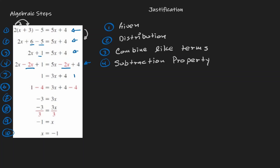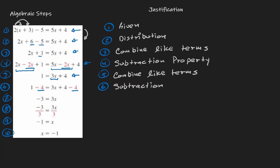If we take a look at the next line, notice that what happened is we combined like terms again. So the justification for step 5 is, again, combine like terms. Looking at the next line — step 6 — what happened is we subtracted 4. So we performed a subtraction property.